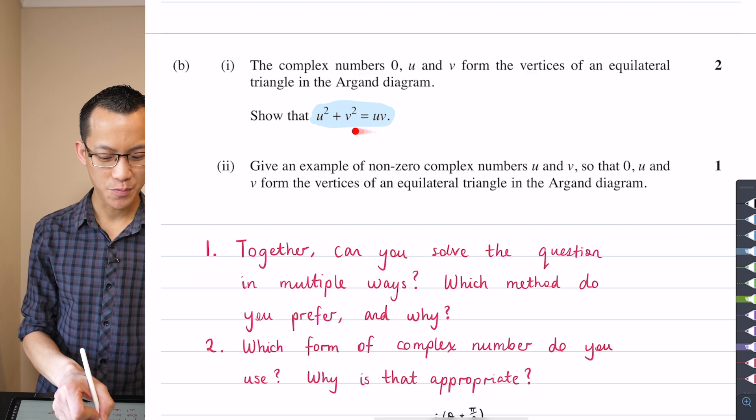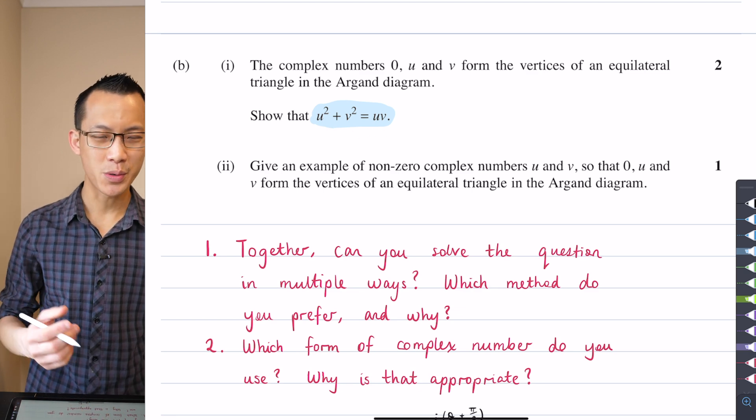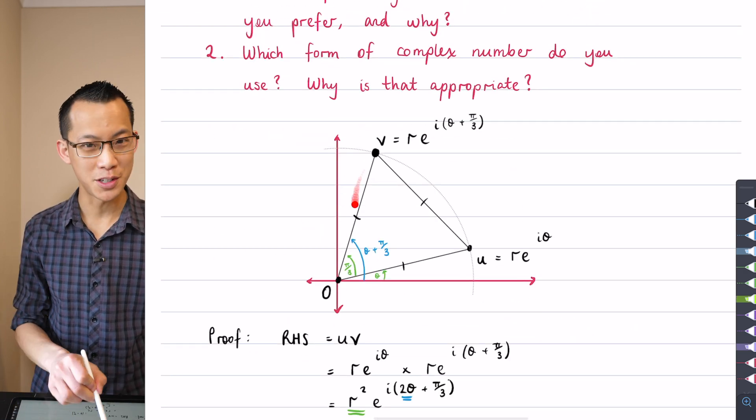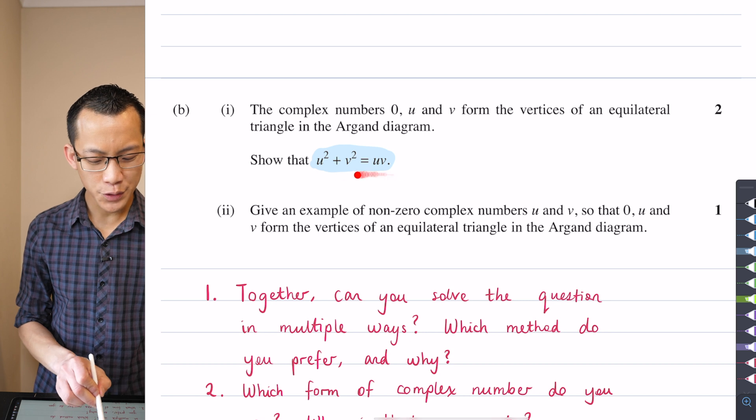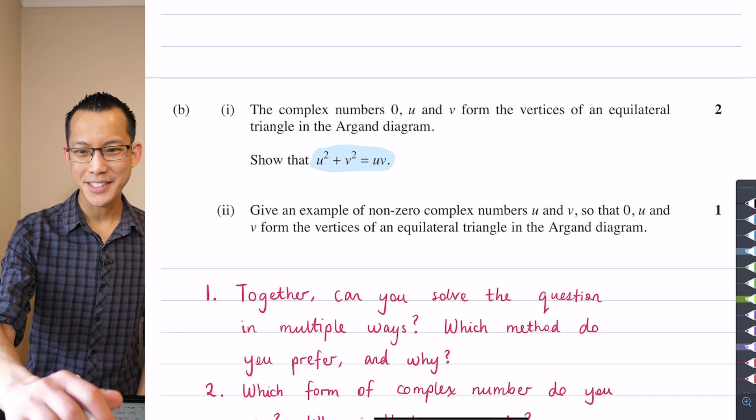Just have a look at this result here. U squared plus V squared equals UV. I just went straight to evaluating it. What is U squared? What is V squared? What is UV? I just use these particular forms to do it. But I wonder if you look at this and stare at it a bit longer